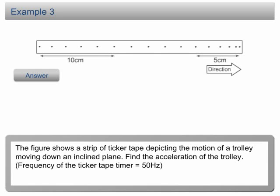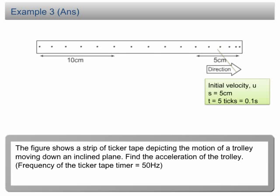Example 3: The figure shows a strip of ticker tape depicting the motion of a moving trolley down an inclined plane. Find the acceleration of the trolley. The frequency of the ticker tape timer is 50 Hz. Initially, the trolley took 5 ticks to move 5 cm. The displacement is 5 cm and the time is 5 ticks or 0.1 seconds. Substituting these values, the initial velocity u = 50 cm/s.